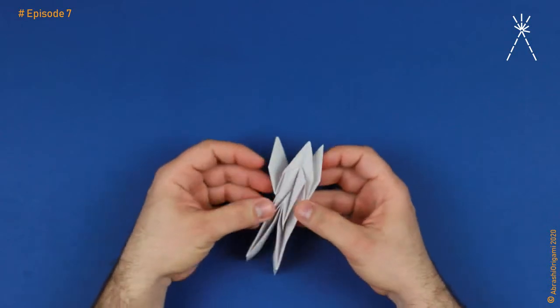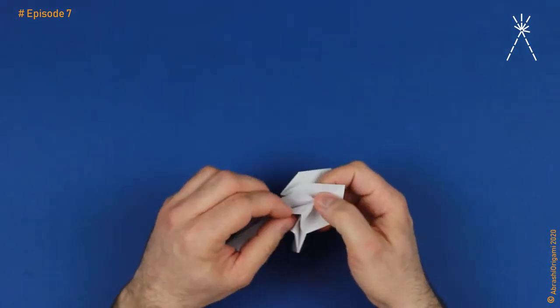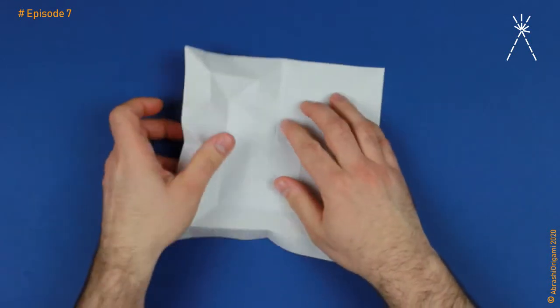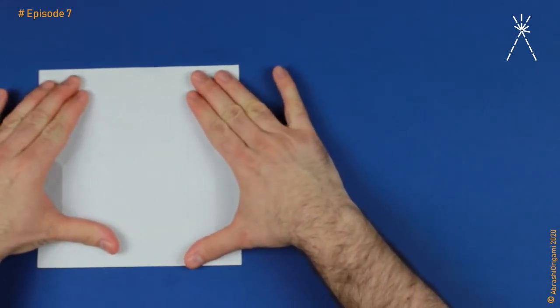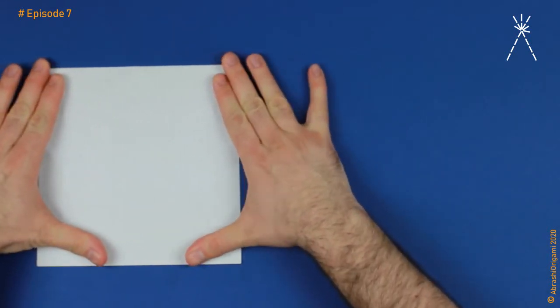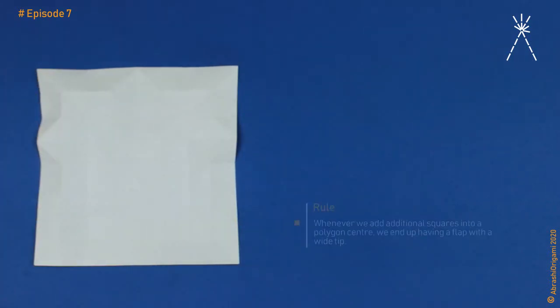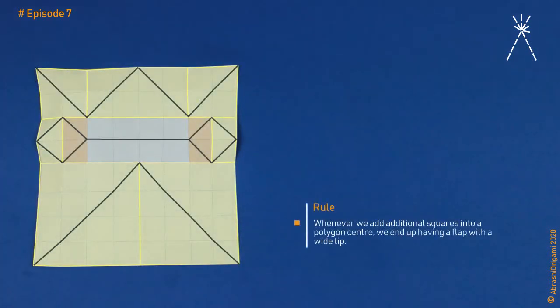So what have we learned? Let's try to define it as some kind of a rule. Whenever we add additional squares into a polygon center, we end up having a flap with a wide tip. Simple as that. I hope this is clear. Whenever we add additional squares into a polygon center, original squares are spaced out.